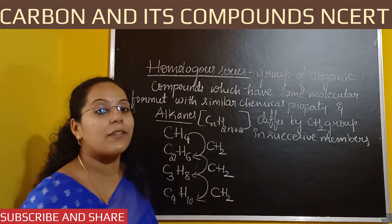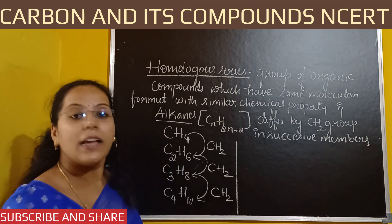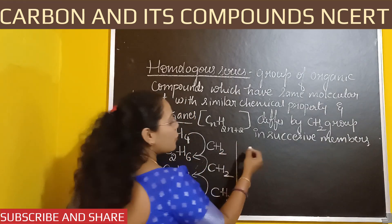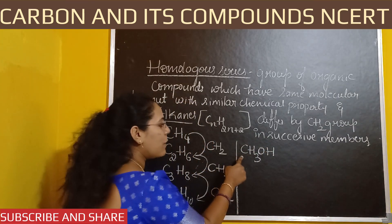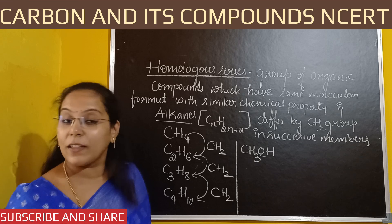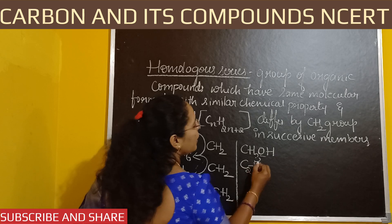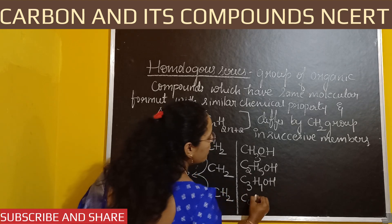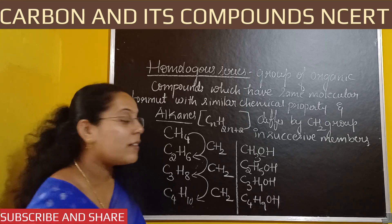Let me take another example — alcohol. The first member of alcohols is methanol, and CH3OH is the formula of methanol. Methanol has 1 carbon and the OH group. Ethanol is C2H5OH, propanol is C3H7OH, and butanol is C4H9OH. Observe that they all have the same general molecular formula pattern.